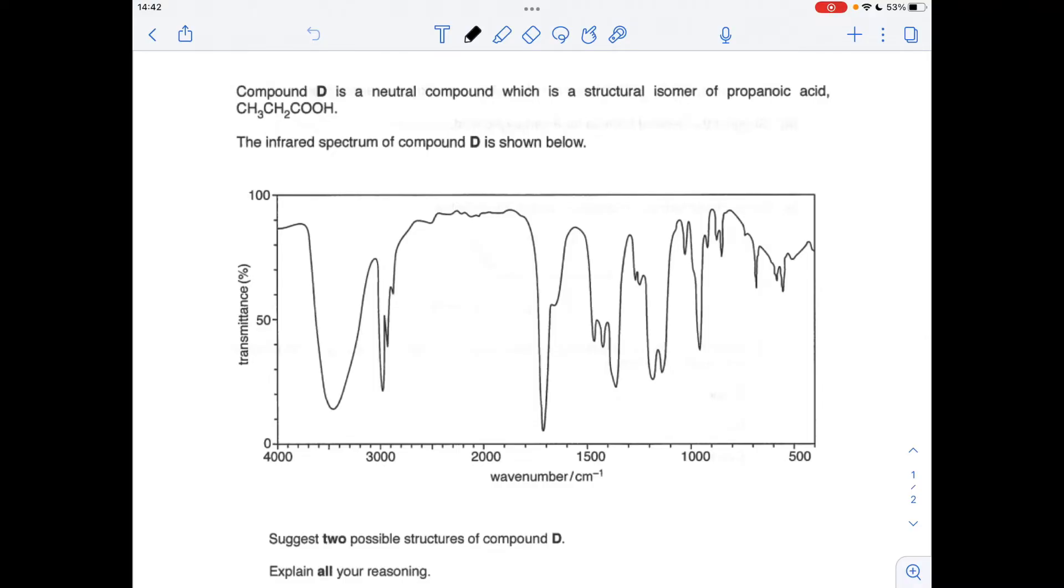Okay, so we'll make a start. Compound D is neutral, so obviously there mustn't be a COOH group in it. It's a structural isomer, so it's going to be C3H6O2, and the infrared spectrum is shown below. Have a quick look at that.